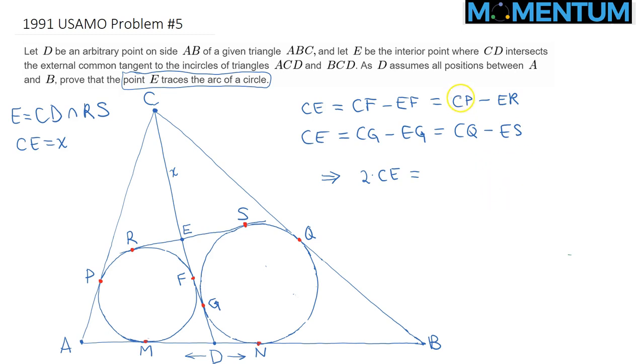So CP is just CA minus AP. So let's write that down: CA minus AP plus, okay, so we're done with this one. CQ is just CB minus BQ. And finally, minus ER plus ES. ER plus ES is just RS, right? Does that make sense? And finally, so let's keep working on this expression.